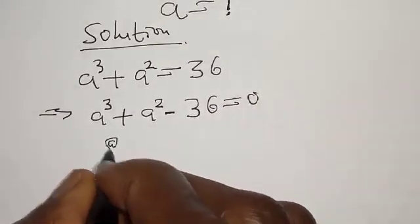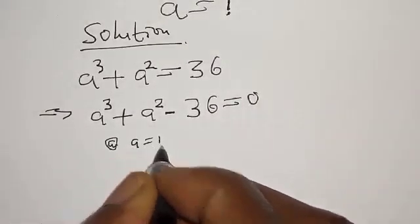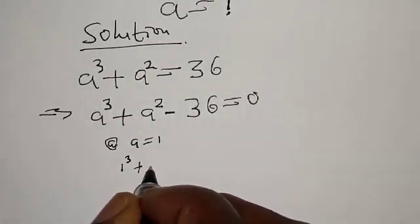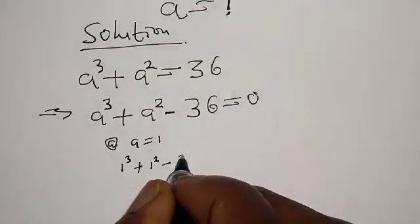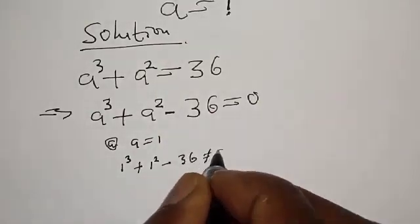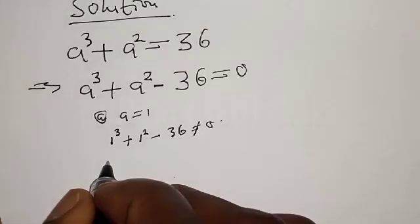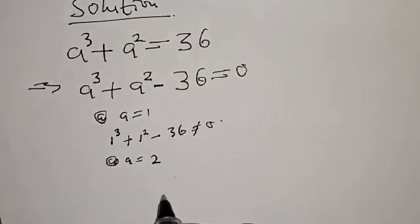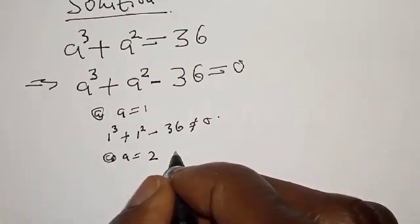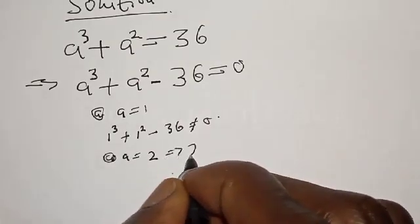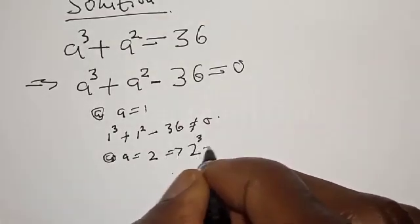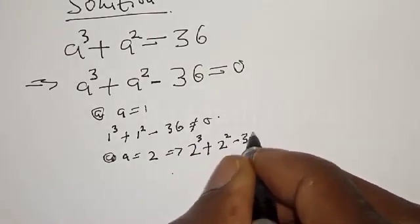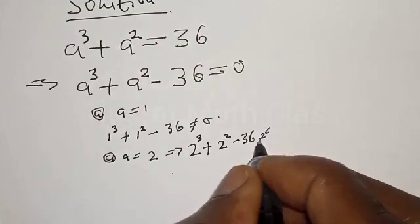Let's test at A equal to 1: we have 1 raised to power 3 plus 1 square minus 36, which is not equal to 0. Then let's check A equal to 2: 2 raised to power 3 plus 2 square minus 36 is also not equal to 0.